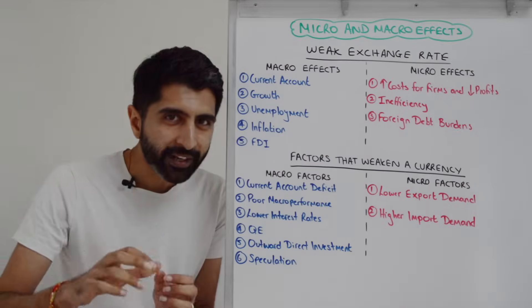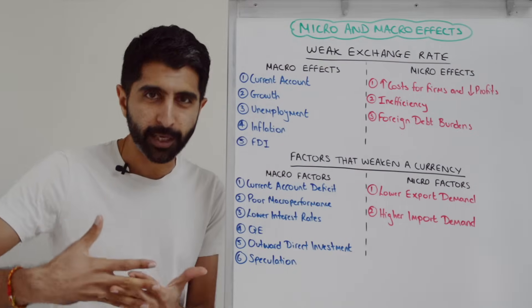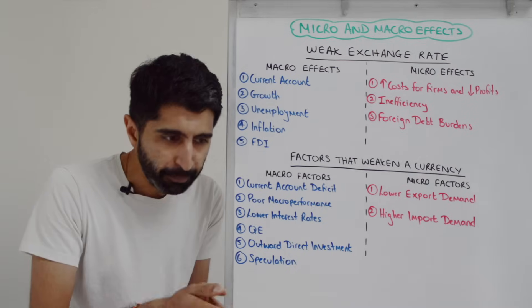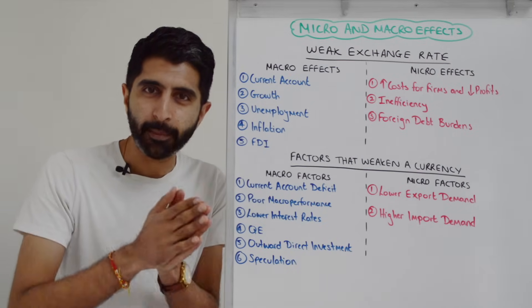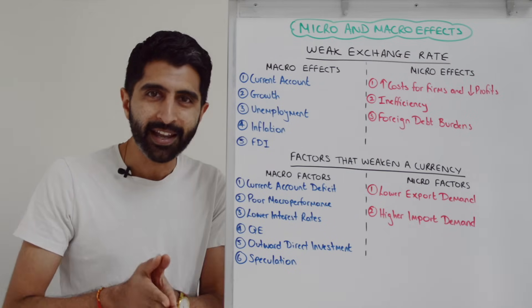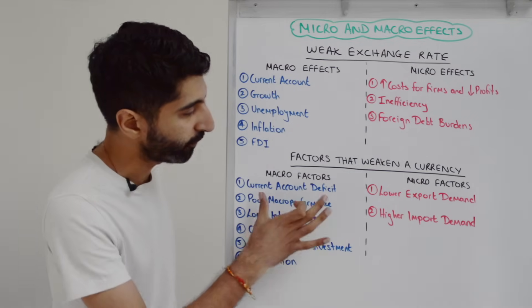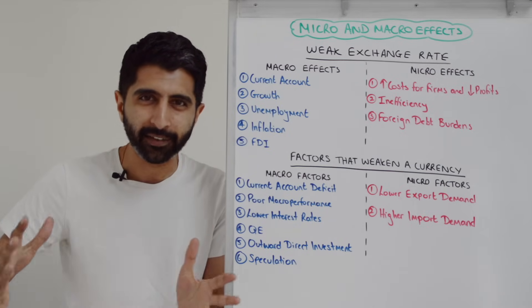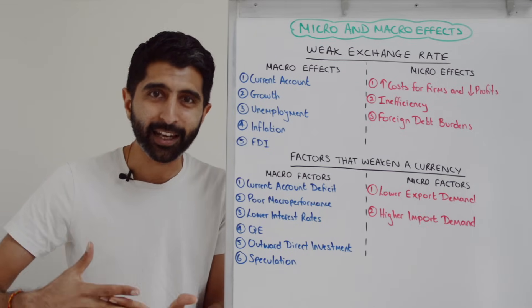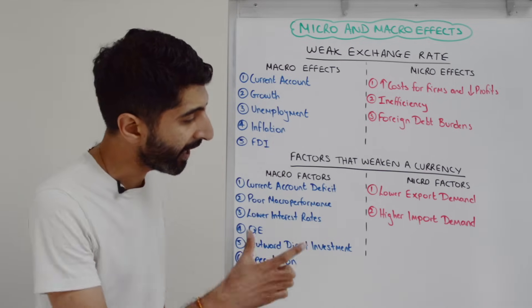What about factors that weaken an exchange rate? Macro factors that can directly weaken an exchange rate include a current account deficit, where import expenditure is greater than export revenue. That implies more supply of the currency than demand for it, putting downward pressure on the exchange rate. Also, a wildly unsustainable current account deficit can mean panic selling of the currency and capital flight, further weakening the exchange rate.